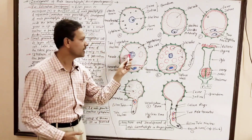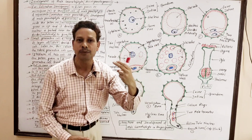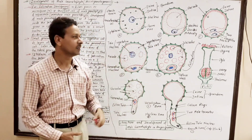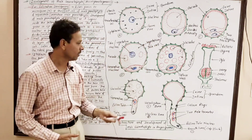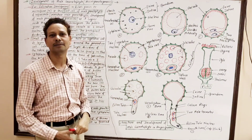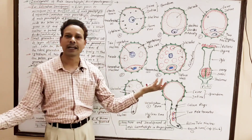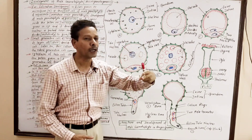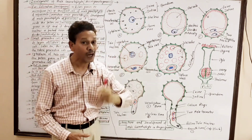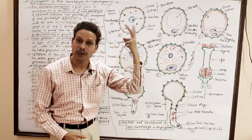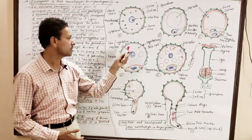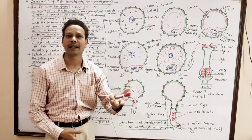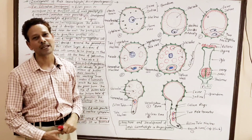The larger cell produced is the vegetative cell, also called the pollen tube cell. The smaller cell produced is the generative cell. So this microspore or pollen grain undergoes the first mitotic division and gives rise to two unequal cells: the large vegetative or tube cell, and the small generative cell.